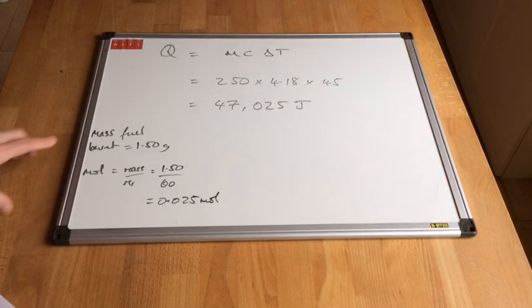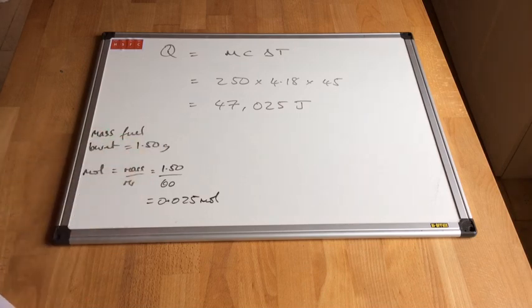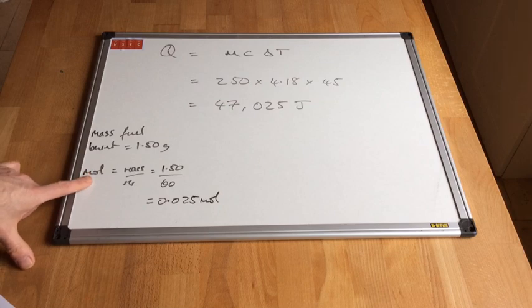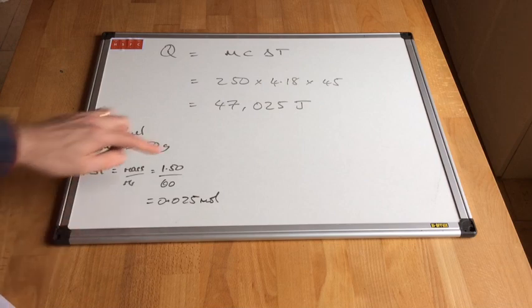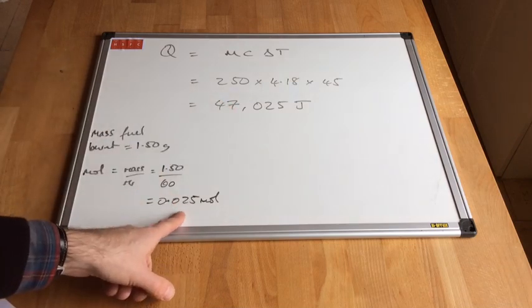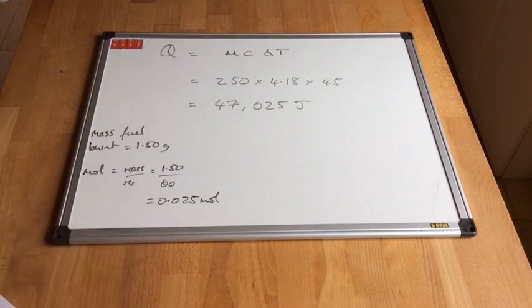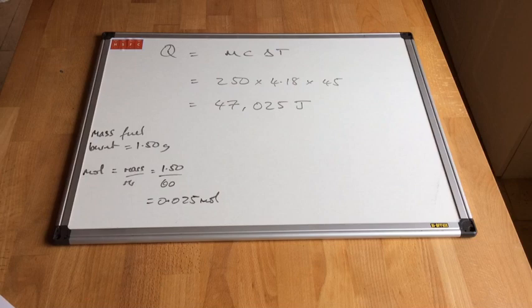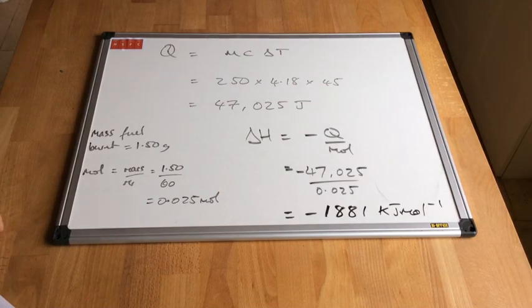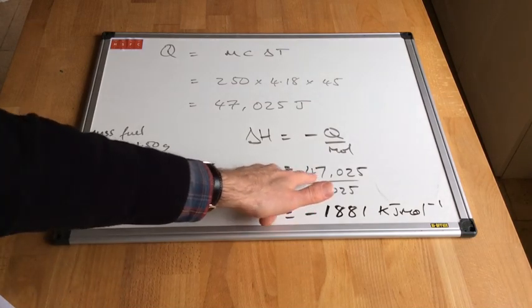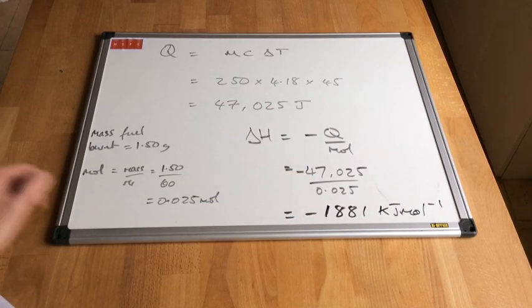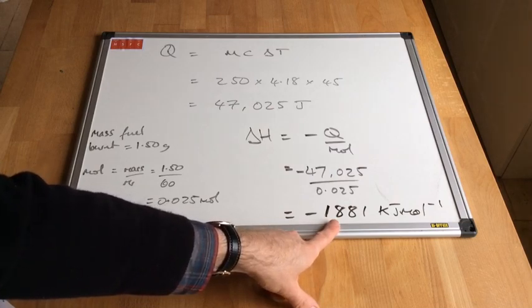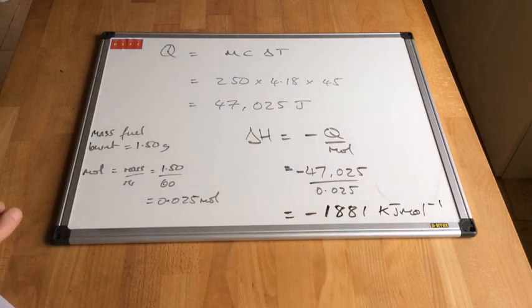Before I do step 2 I've just calculated from the mass of fuel burnt. Remember there was 1.5 grams of propane-1-ol burnt. I've converted that to moles by dividing the mass by the MR, so 1.5 divided by 60 comes out at 0.025 moles. So that many joules has been produced from that many moles of propane-1-ol. So in step 2 we convert that to kilojoules per mole by dividing the Q by the moles. And there are the numbers. So we've got minus, remember exothermic, minus 47,025 joules and we're dividing that by 0.025 moles. And I've converted that to kilojoules per mole and it comes out at 1,881 kilojoules per mole.